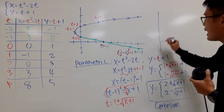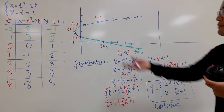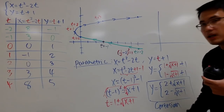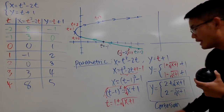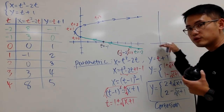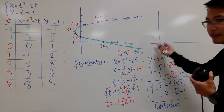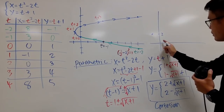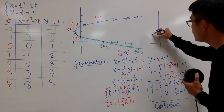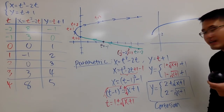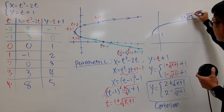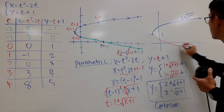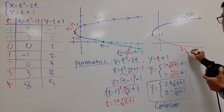You can graph parametric equations two ways: do the table directly, or convert to Cartesian form first. With x plus 1 inside the square root, you shift the original square root graph one unit to the left. Then the plus 2 shifts it up twice. The top curve is y equals 2 plus square root of x plus 1, and the bottom curve is y equals 2 minus square root of x plus 1.